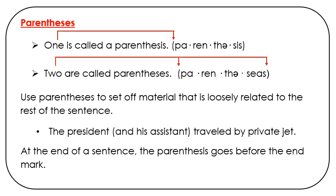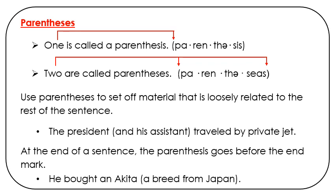At the end of the sentence, the parenthesis goes before the end mark. He bought an Akita, a breed from Japan. There should be a space before the parenthesis, but before punctuation there isn't. You'll see there is a space in the middle of a sentence also. There should not be a space between the parenthesis and the words that come after it or the word that it comes after.